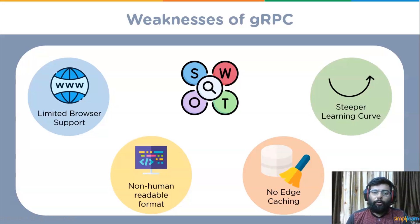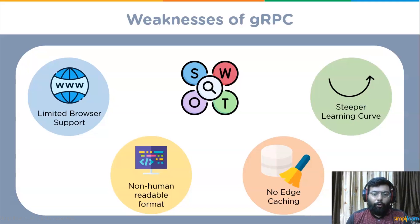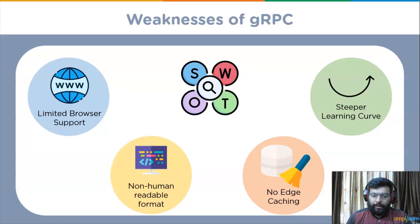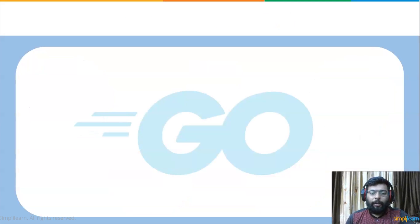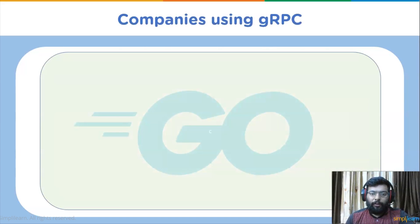The final consideration is limited community support. The community support for a specific technology can be a big factor in its adoption. With minimal developer support outside of Google and not many tools created for HTTP/2 and Protocol Buffers, the community lacks information about best practices. However, this is changing as more developers adopt gRPC.